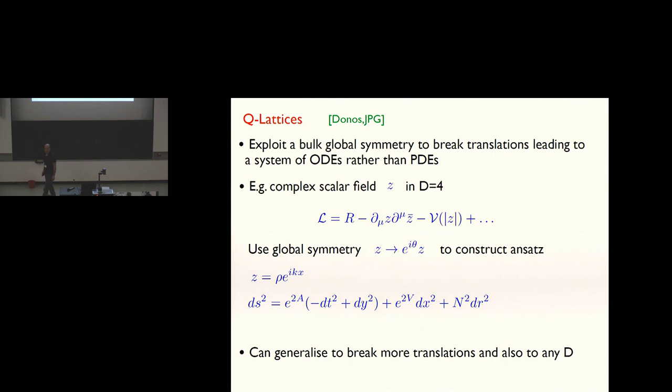Everything will be in the context of Q lattices. We've heard about Q lattices or examples of Q lattices a couple of times already in this conference. The idea of a Q lattice is that, so in general, if you were looking at spatial modulations of CFTs, you've got dependence of your bulk fields in the direction you're breaking translations, and you've got dependence on the radial directions. So in general, you're going to have to solve a system of PDEs.